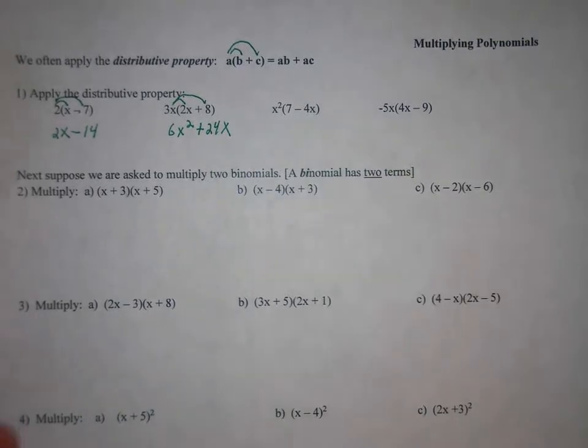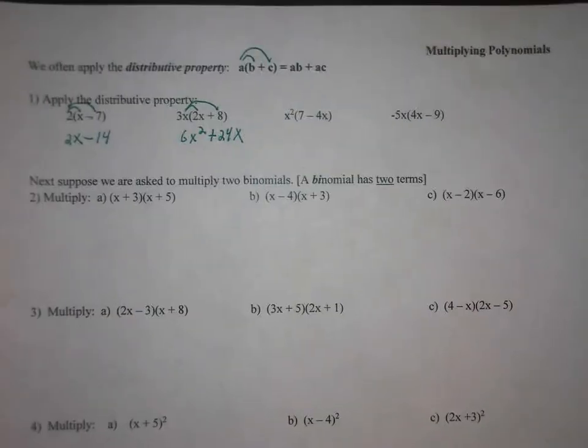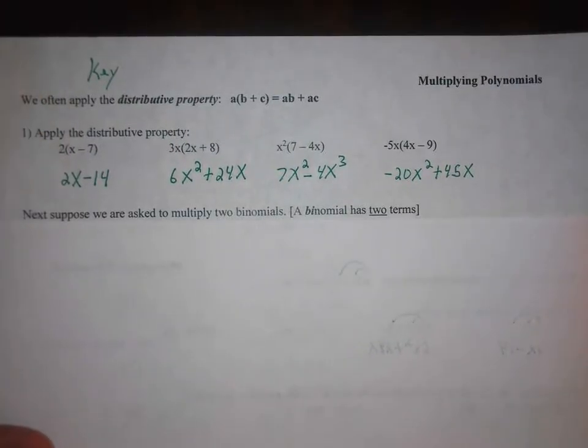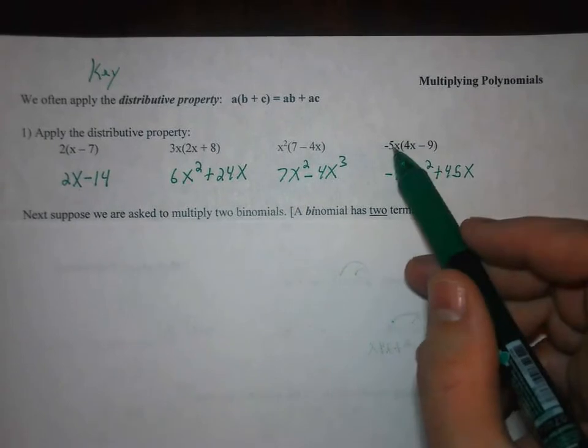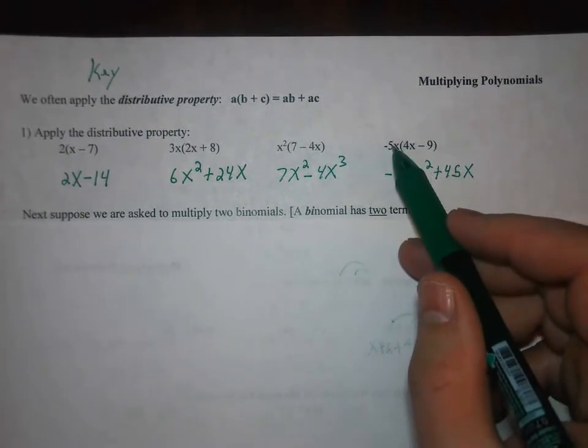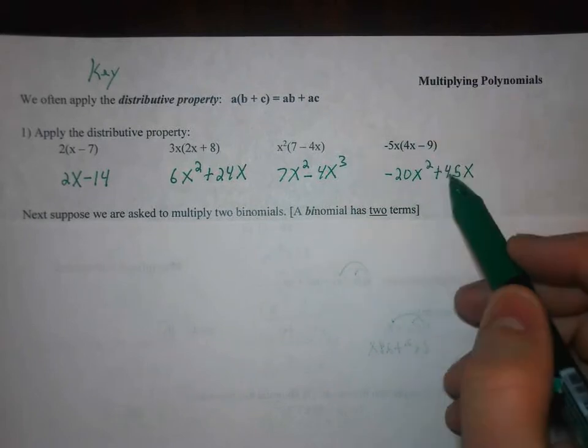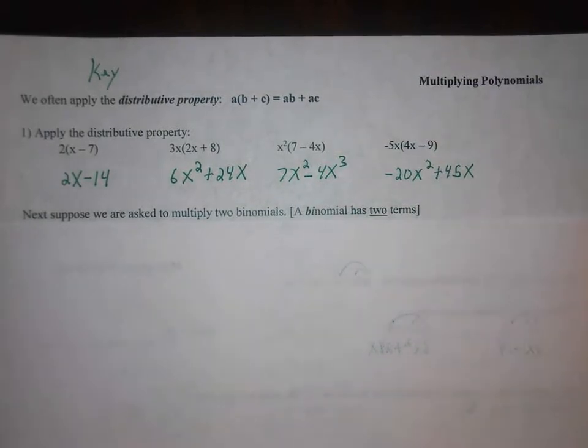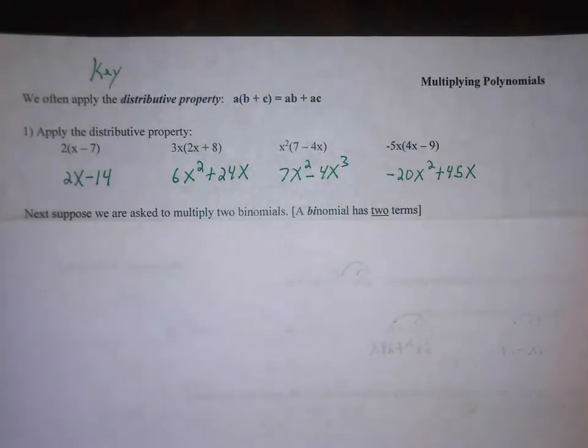Okay, so if you do the second two there, you can pause the video and I'll put the answers up. Okay, so that's what you get for those last two. The thing you have to pay attention to is make sure that you watch your signs. So in the last one here, negative 5x times a negative 9 is a positive 45x. So again, just slow down and pay attention to the signs.